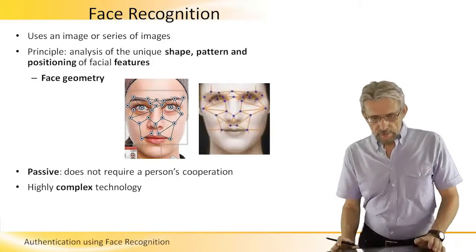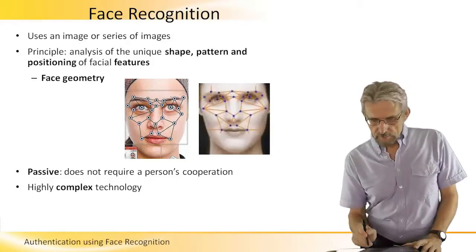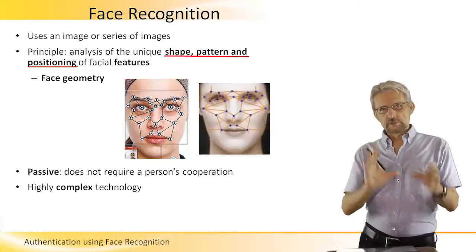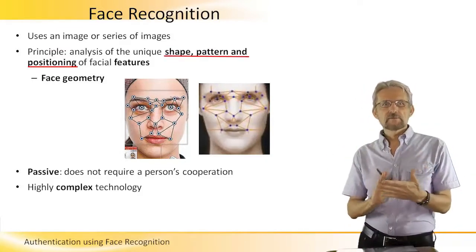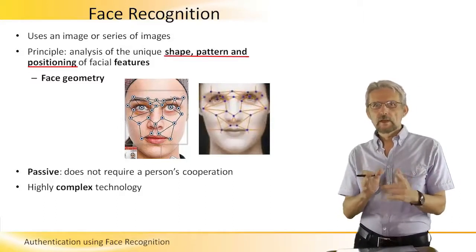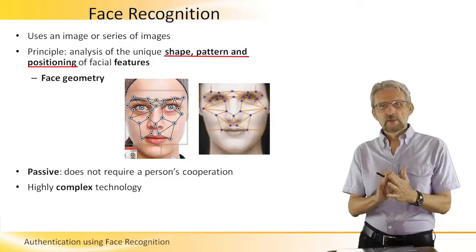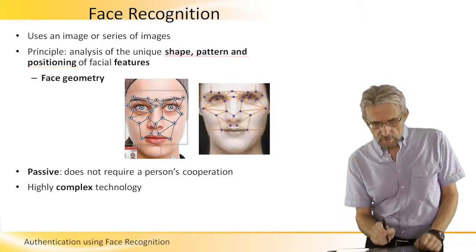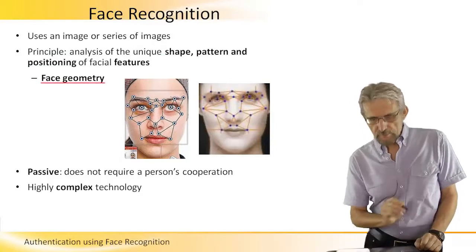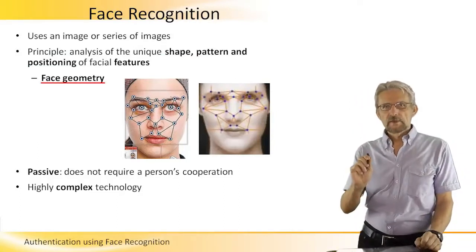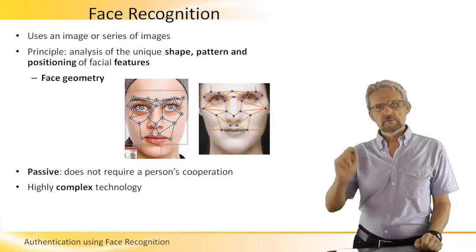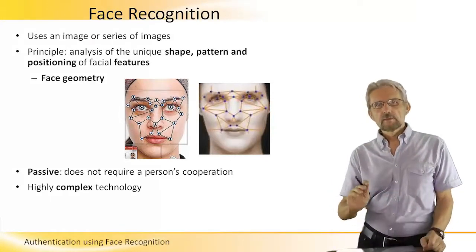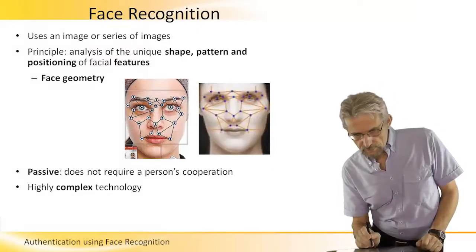What happens is that we somehow extract the shape or pattern or positioning of these various features. So again, just like with a fingerprint, you don't do an image matching — you extract some features, and as you can see in these images here, you extract face geometry. So you identify the various points on the face, where the nose is, the eyes, and so on, and then you build a map which shows these relationships.